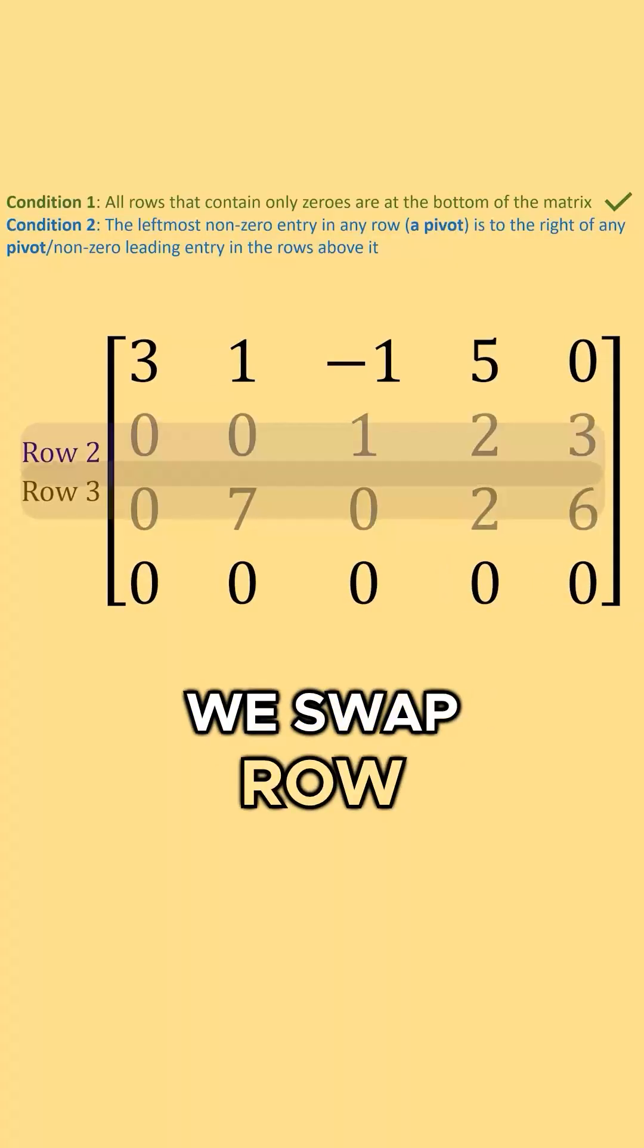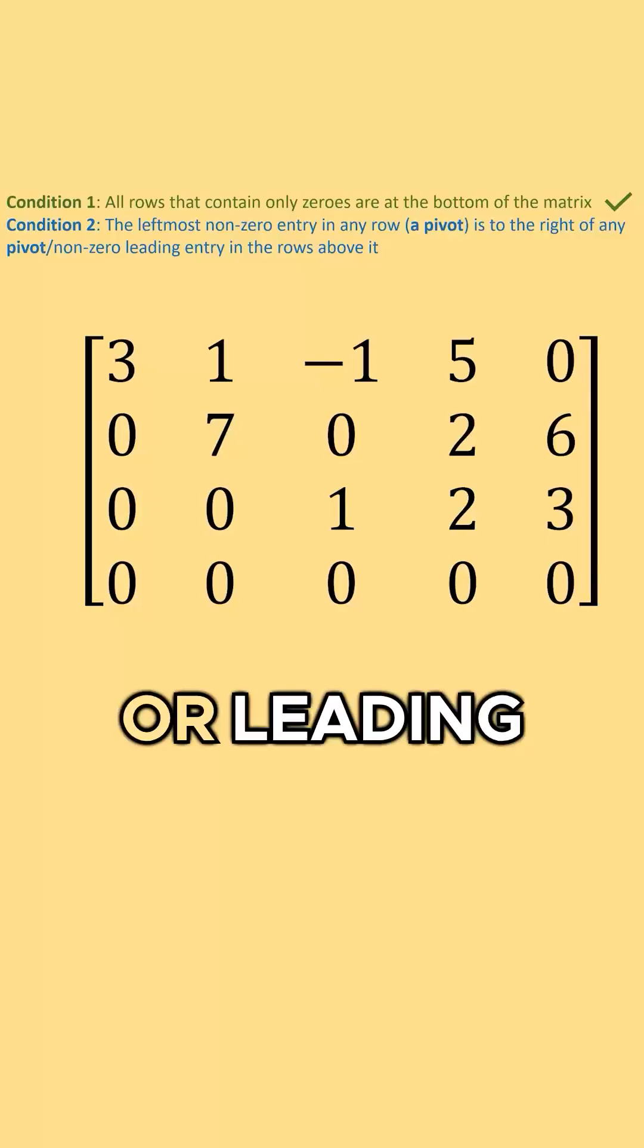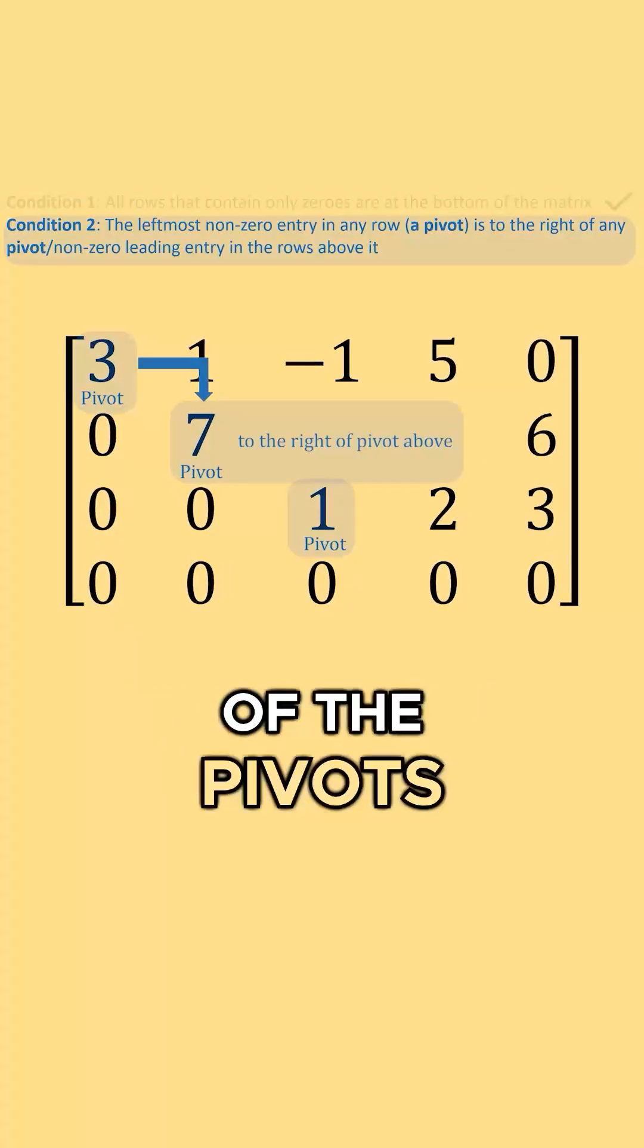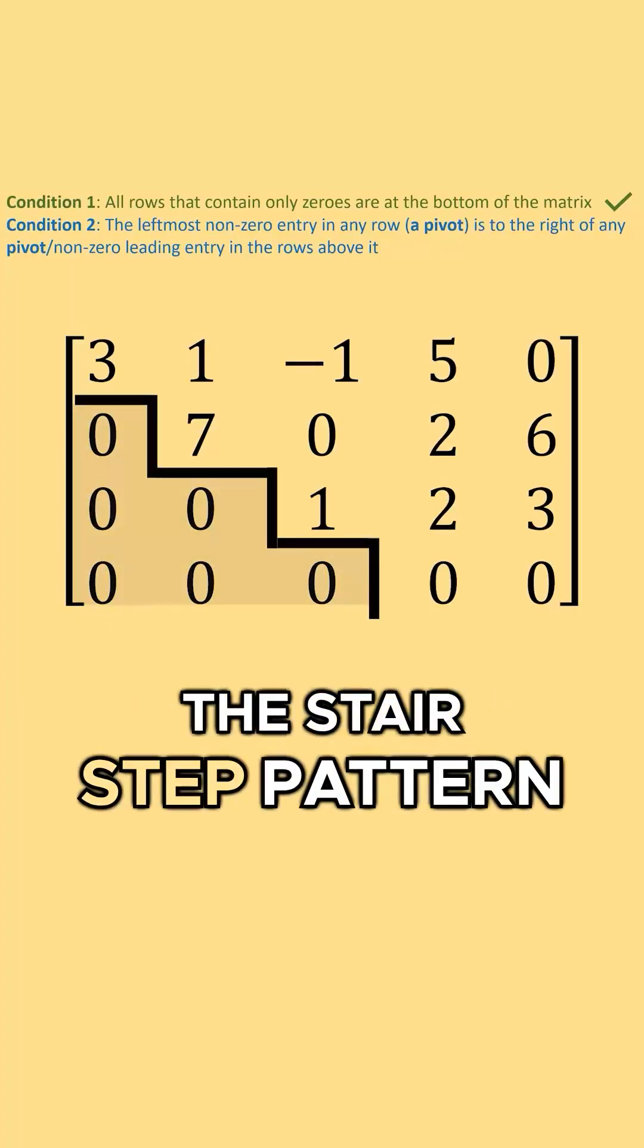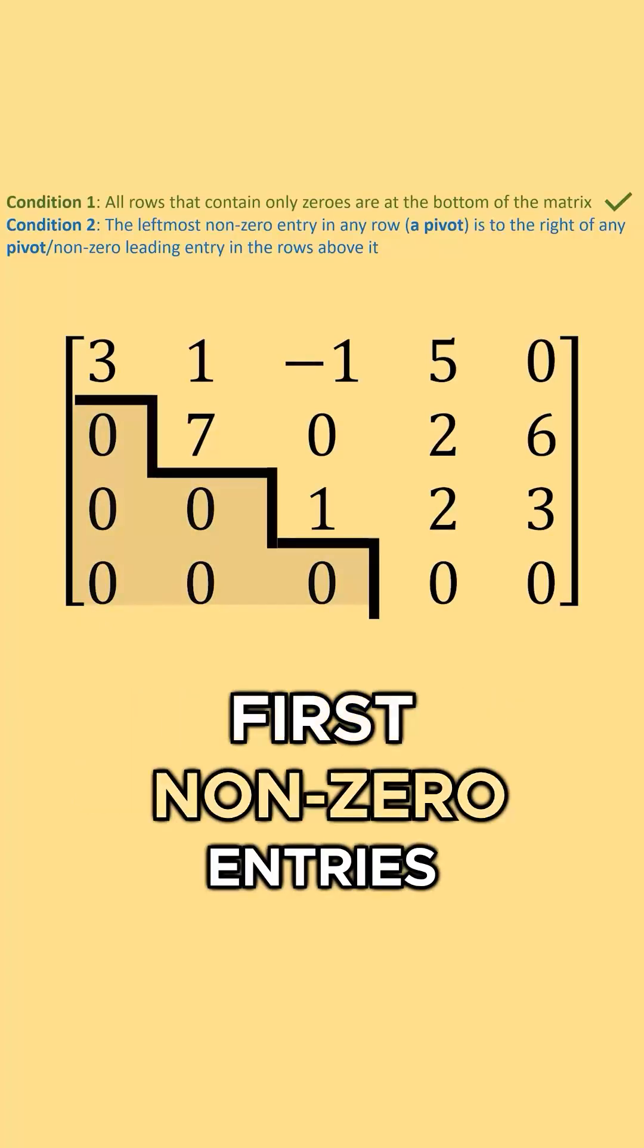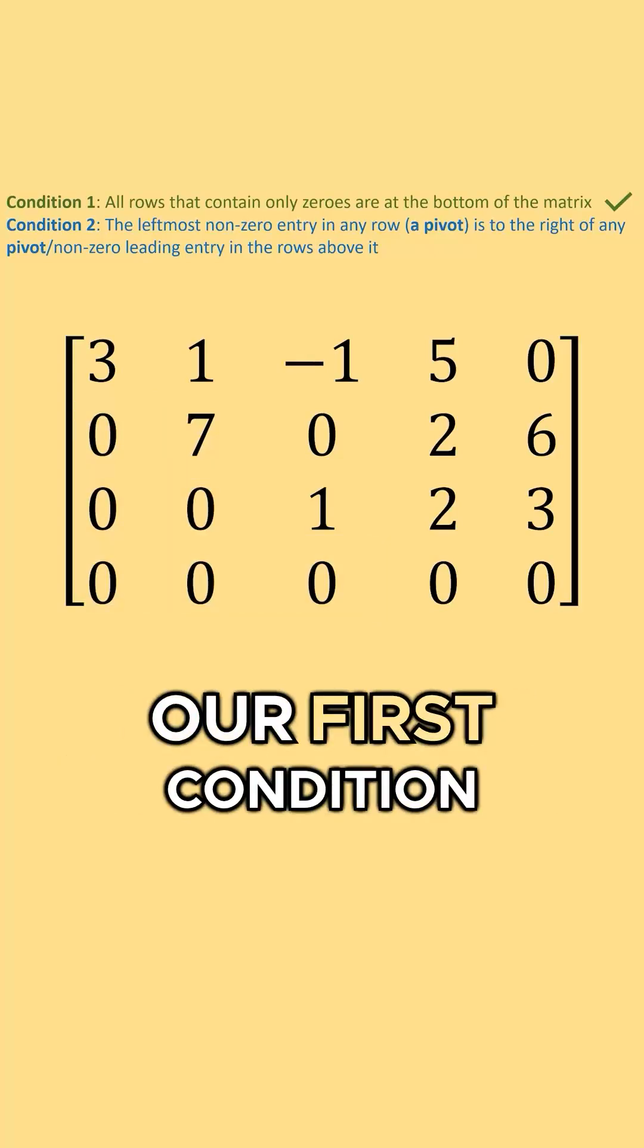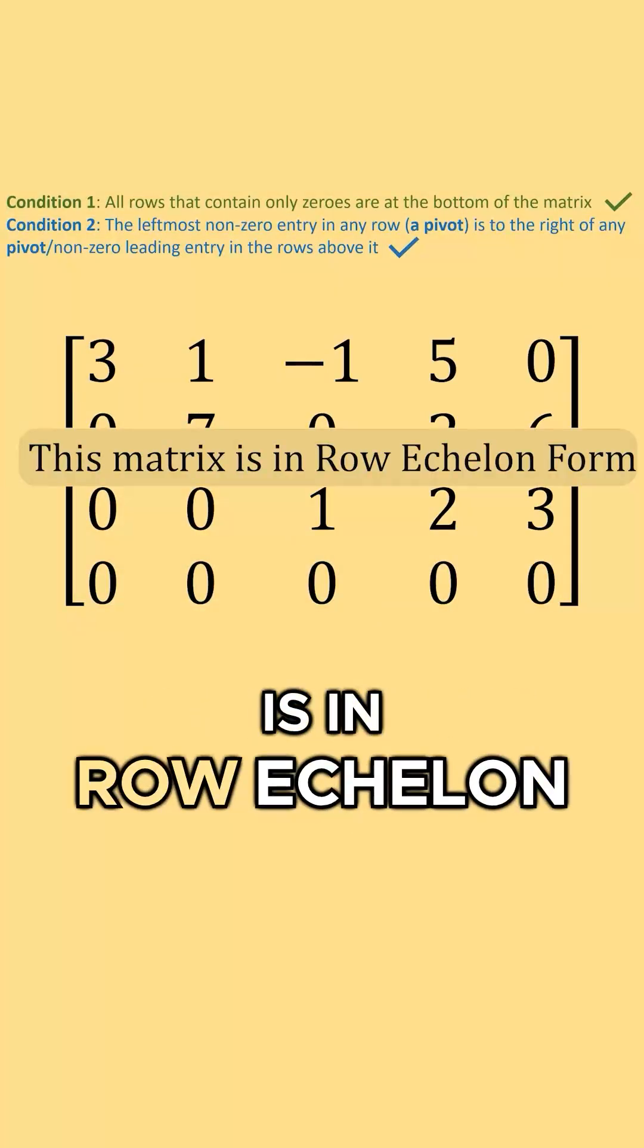What happens if we swap row 2 and row 3? We get this matrix. Each of our pivots or leading entries, 3, 7, and 1, are to the right of the pivots or leading entries above them. Some people refer to this as the stair-step pattern for the pivot or first non-zero entries of the rows. This matrix now satisfies our first condition and our second condition, and so this matrix is in row echelon form.